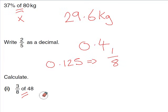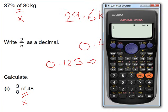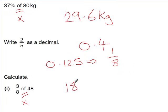Remember, 'of' means times. So for three-eighths of 48, use the fraction button to enter three-eighths, press times, then 48. The answer is 18 — nice and simple.